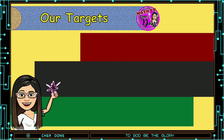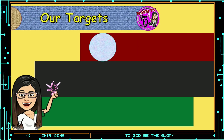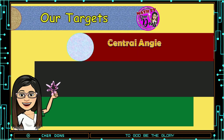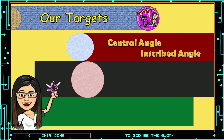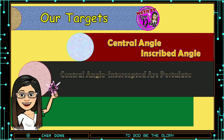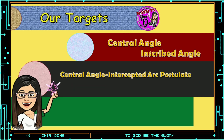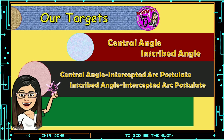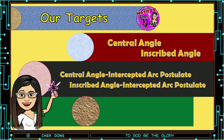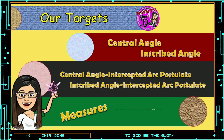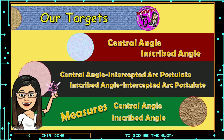Our targets for today: define and illustrate Central and Inscribed Angles, state and discuss the Central Angle Intercepted Arc Postulate and the Inscribed Angle Intercepted Arc Postulate, and find the measures of Central and Inscribed Angles.